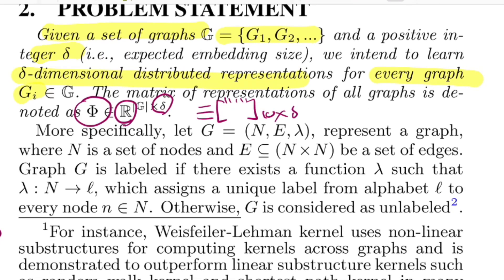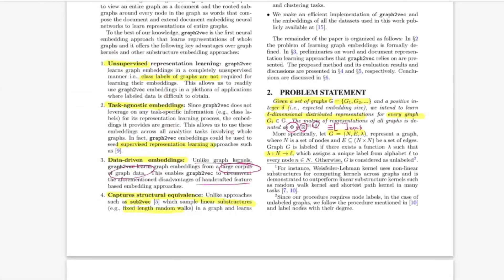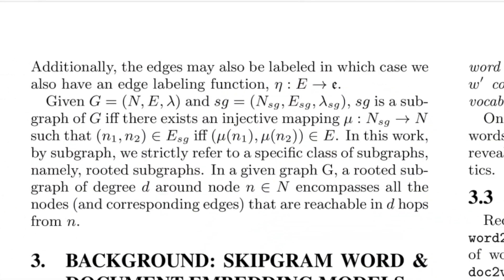Each graph is represented with a set of nodes N, edges E, and a function lambda that maps nodes to their labels. There could also be labels on edges, in which case you define a function eta that takes in an edge or set of edges and maps it to the label for that edge. They also define subgraphs where nodes and edges are sub-parts of the original graph, and the notion of degree of a node N, which is all the d-hop neighbors reachable from a central point N.